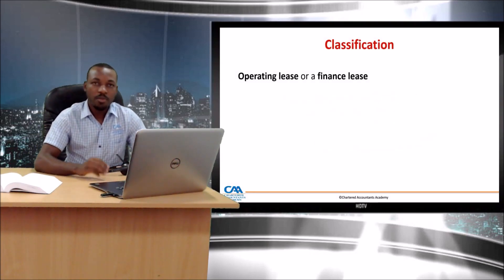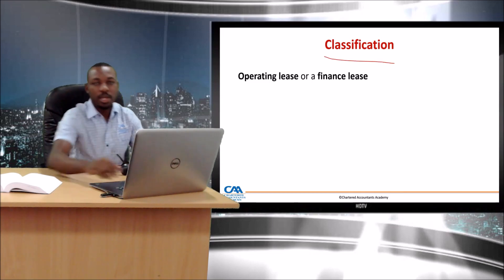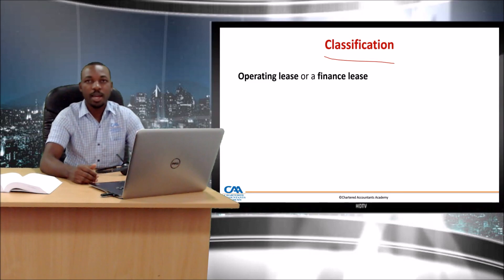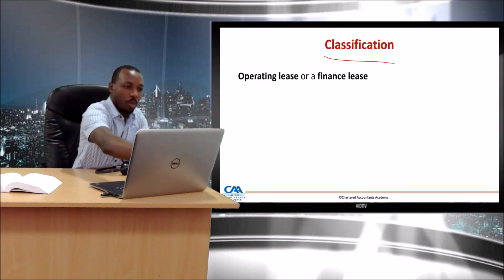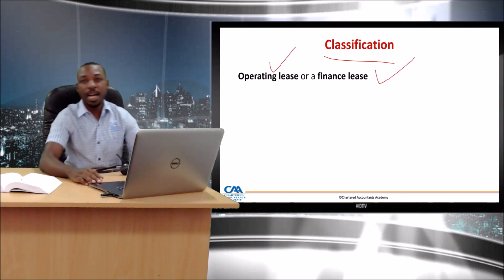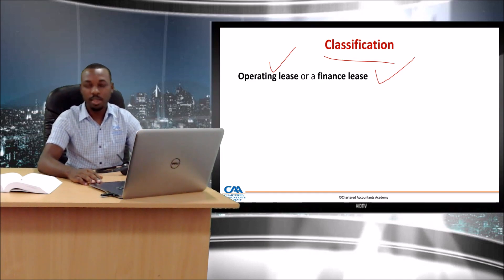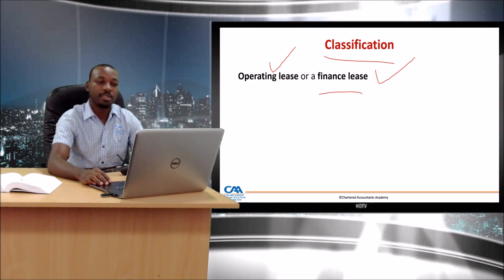From a lessor's perspective, classification takes place first. You need to be able to classify the lease transaction into either an operating lease or a finance lease. The requirements are straight in the standard — you know where to find them and where you need to prove if something is a finance lease or not.